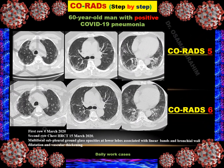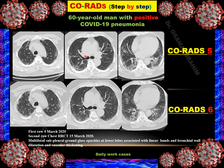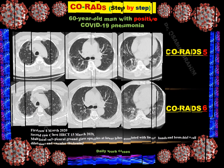Here is an example for CO-RADS 5: a patient diagnosed on March 4th, and the follow-up study done on March 15th still showing residual abnormality in the lung. Since we already know the patient is positive, we diagnose it as CO-RADS 6. The second row is also diagnosed as CO-RADS 6.